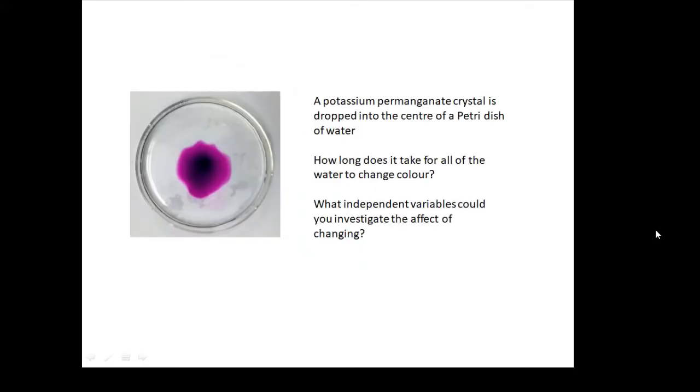The first experiment is very simple. You get a petri dish full of water and drop a little potassium permanganate crystal, this little purple crystal, in the middle. Then you watch what happens as the purple dye spreads and fills the water.